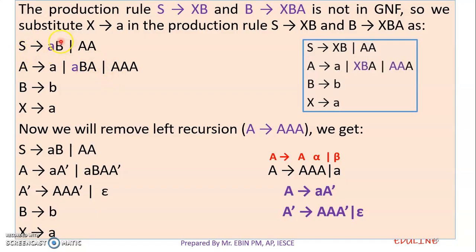Now S tends to a, b — this is a production and a normal formula. This is a non-terminal. If a non-terminal is produced, it is not a non-terminal — the problem is a small letter. If you have a case, this is correct. S tends to AA, A tends to AAA — and you have all the correct formula.